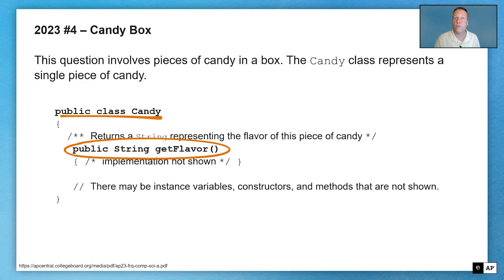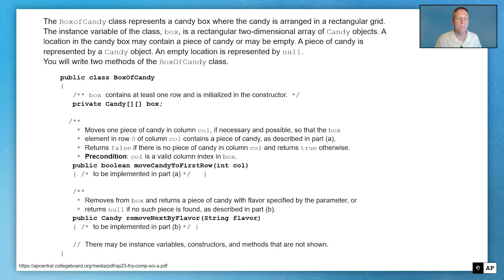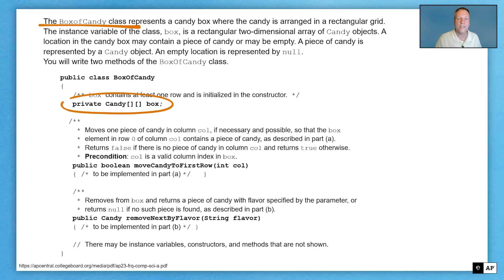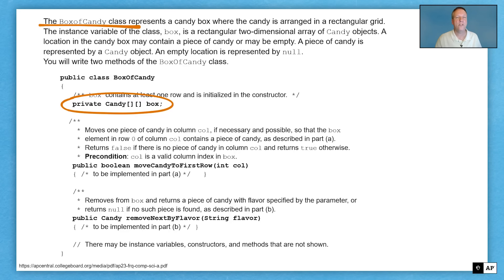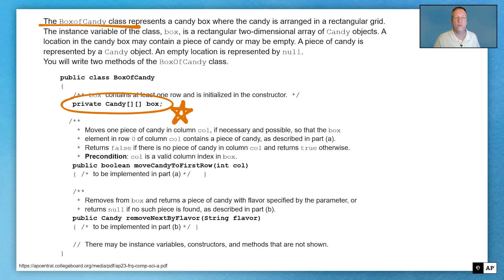We just know that we can get the flavor of a candy and it's going to be a String. Then we have the BoxOfCandy class, which represents a candy box where the candy is arranged in a rectangular grid — the 2D array. The instance variable of the class, box, is a rectangular two-dimensional array of candy objects. A location in the candy box may contain a piece of candy or it may be empty. A piece of candy is represented by a Candy object, and an empty location is represented by null. You're going to write two methods of the BoxOfCandy class.